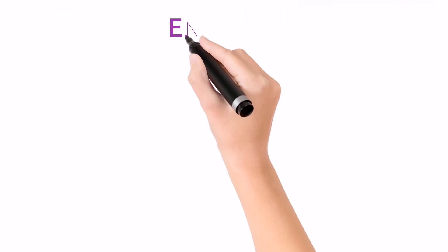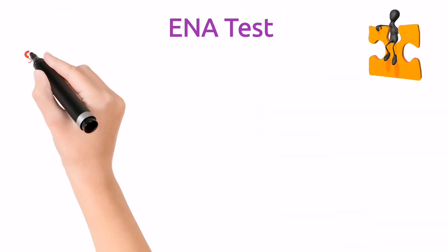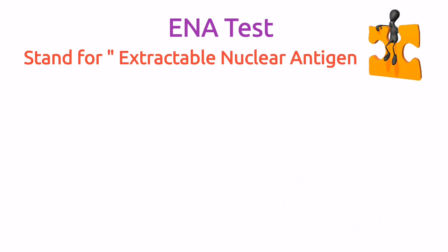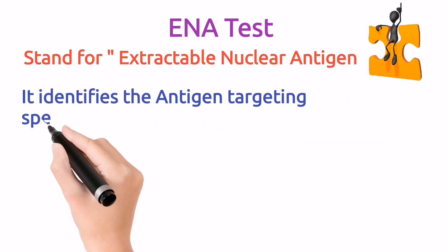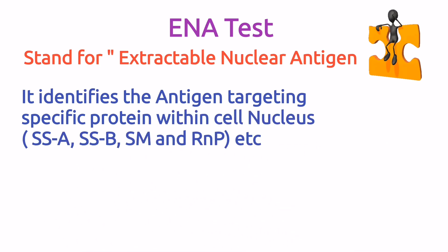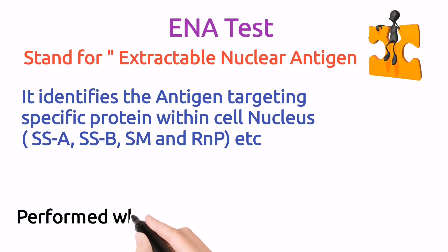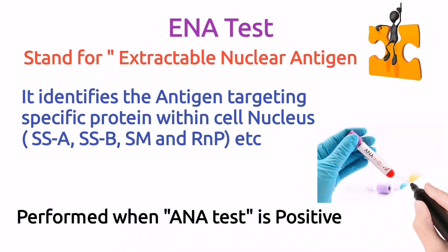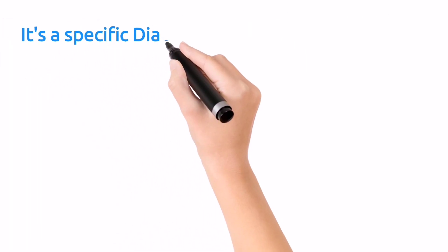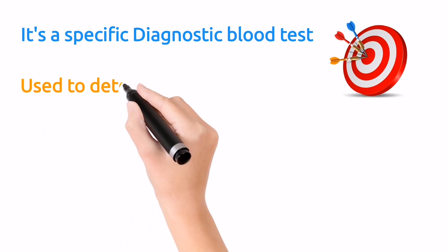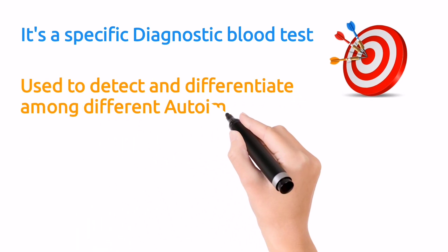On the other hand, ENA stands for Extractable Nuclear Antigen. This test detects antigens that target specific proteins present within the cell nucleus, like SSA, SSB, SM, and RNP proteins. Remember, ENA test is recommended when ANA test is positive. ENA is a diagnostic type of test used to detect and differentiate among different autoimmune disorders.